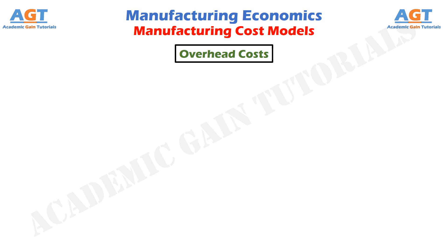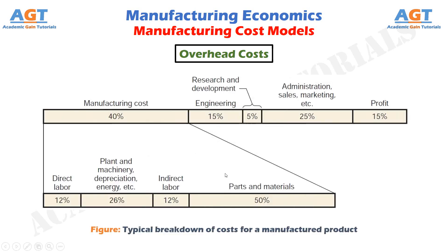This figure shows the typical breakdown of costs for a manufactured product, where, amongst other costs, the manufacturing cost accounts for 40% of the total cost for this particular product. 50% of this 40% manufacturing cost goes into direct and indirect labor cost. The remaining 26% of the 40% manufacturing cost goes into plant and machinery, depreciation, energy, etc. Health benefits, if available from the company, are fringe benefits that apply to all regular employees, and so they would be included in the direct labor overhead in the factory as well as the corporate offices.